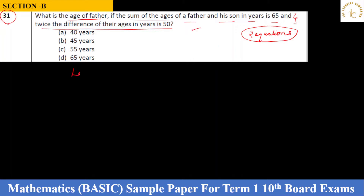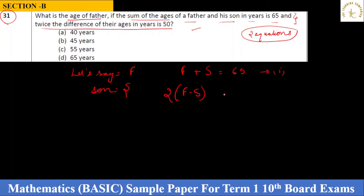Let father's age be F and son's age be S. The sum of their ages gives us: F + S = 65. Twice the difference of their ages is 50, so dividing both sides by 2: F − S = 25. Those are our two equations.